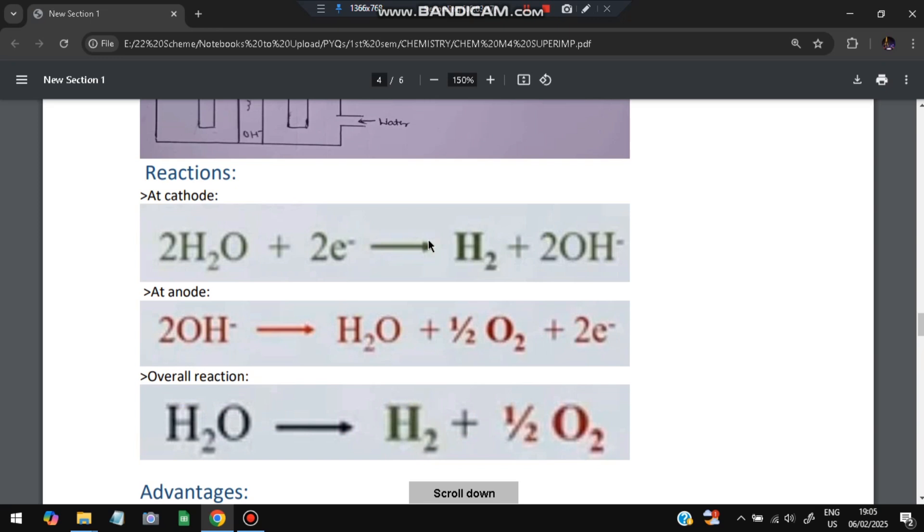So a couple of reactions happen. At the cathode the following reaction happens: 2H2O + 2e- → H2 + 2OH-. H2 gets separated. At anode O2 gets separated. And overall reaction: H2O → H2 + ½O2.